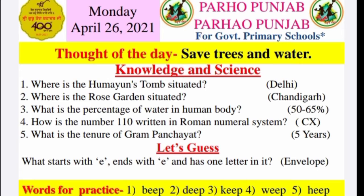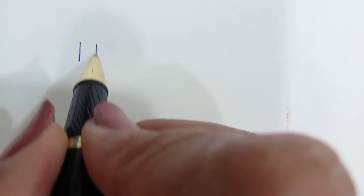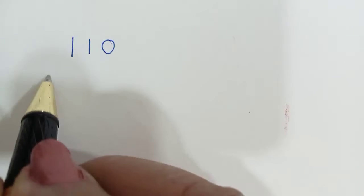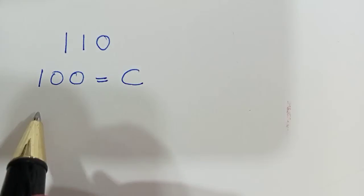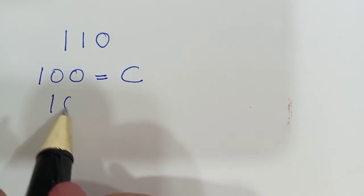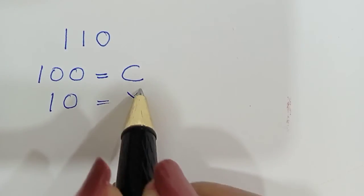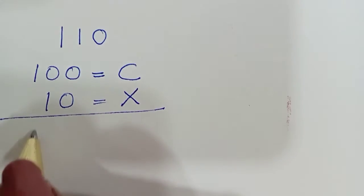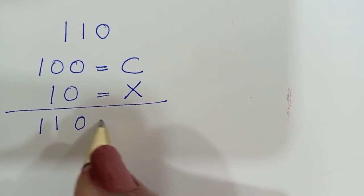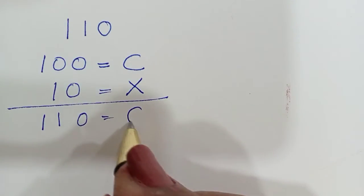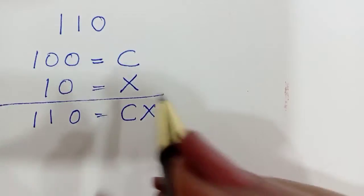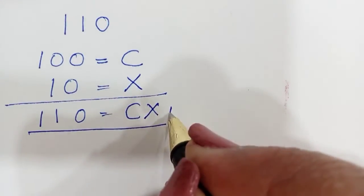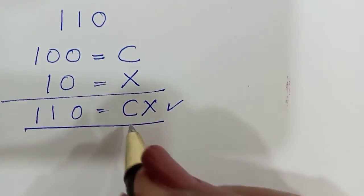The next question is: how is the number 110 written in the Roman numeral system? Yaani ki 110 Roman ankh kaan de vich kinna likhya janda hai? Eh likhya janda hai CX — C yaani ki 100, X yaani ki 10, so 100 plus 10 is 110. Eh likhya janda hai CX.